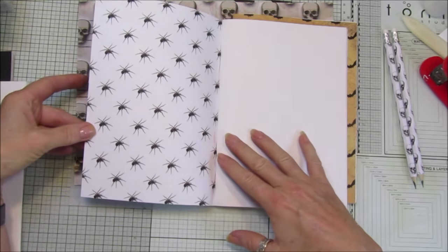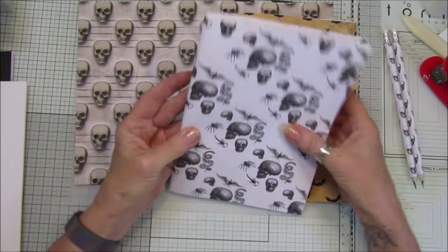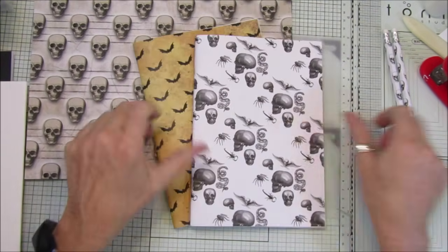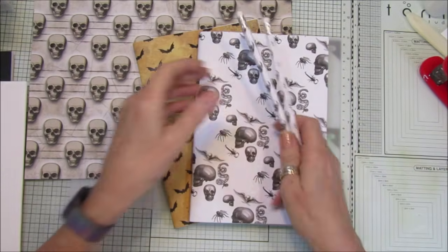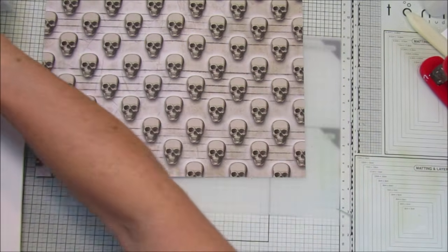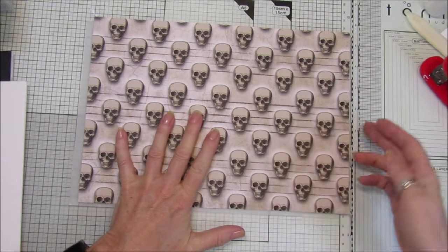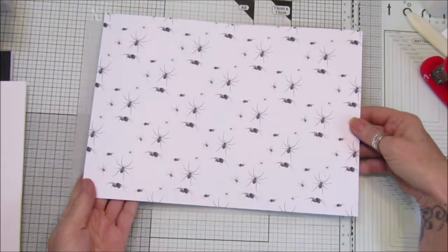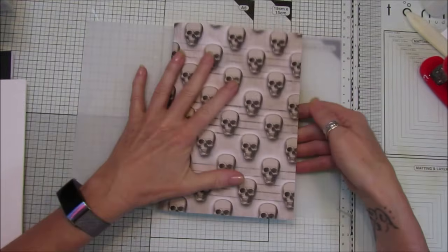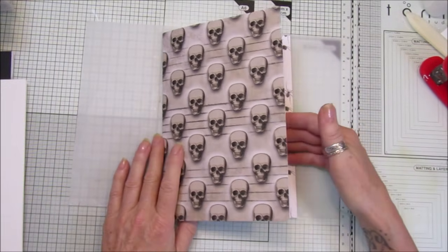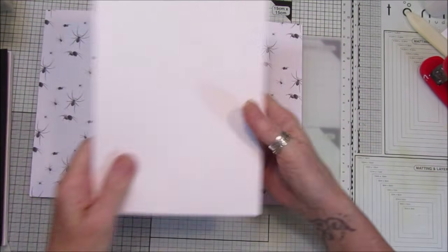This one here I've got some skulls and scorpions and snakes and spiders, and then we've got spiders inside. These are super simple and a really good gift and I've got the pencils as well. I'll pop that to the side. I've got this one which I'm going to show you, which has got the skulls on one side and the spiders on the other.